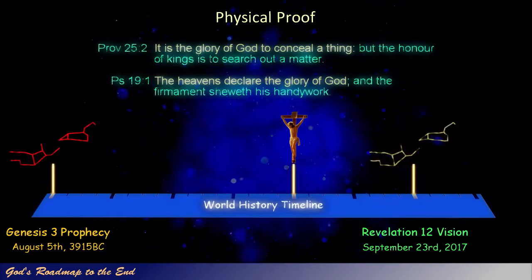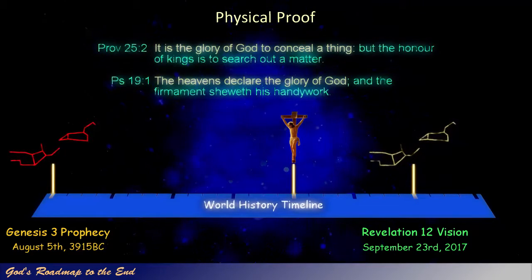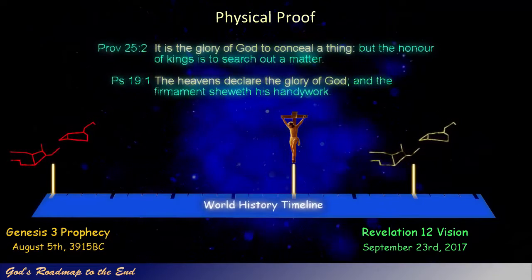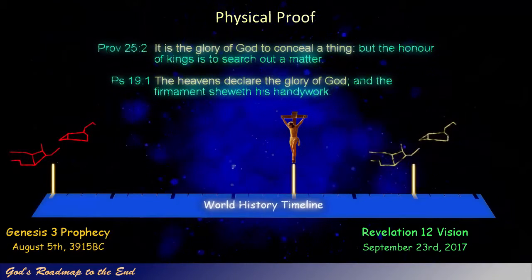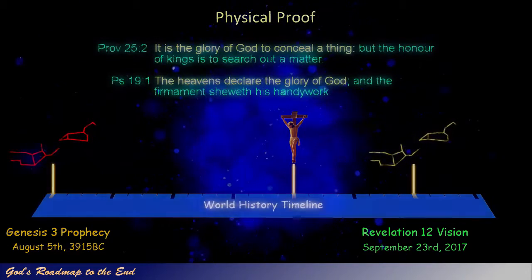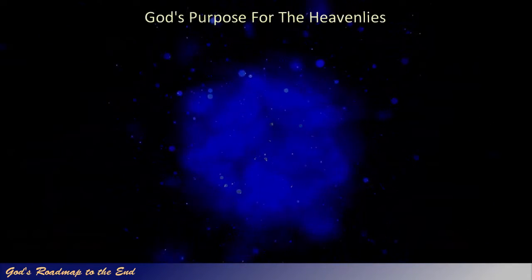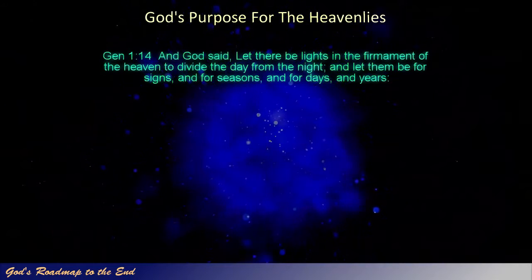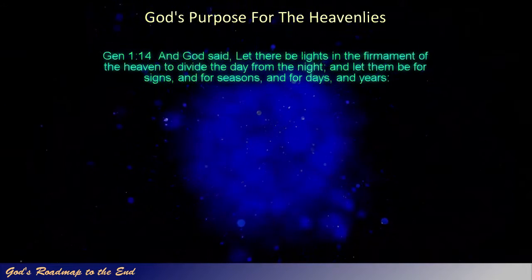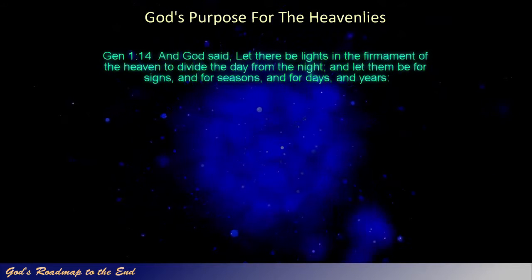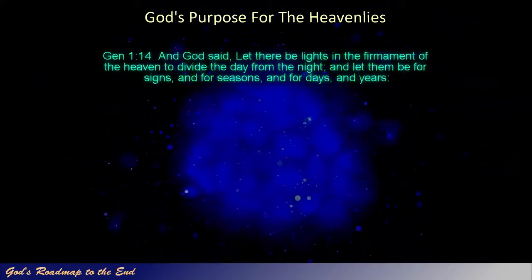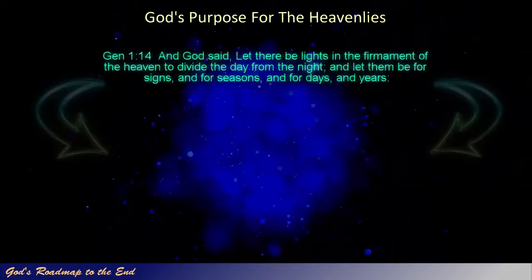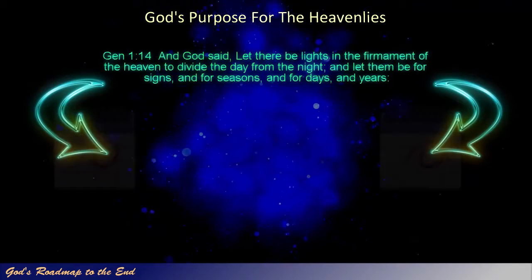It is obvious that God had a specific purpose in mind when he created the sun, the moon and the stars, and that part of their purpose is to provide us with specific information on God's timing. When we now read Genesis 1 verse 14, knowing about these celestial signs that are marking a specific prophecy and vision in the word of God, it is amazing to discover that the primary purpose God assigned to the heavenly bodies is to serve as signals that point out special days on God's calendar.